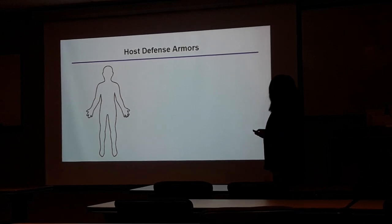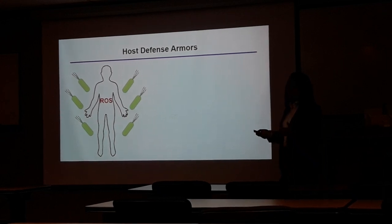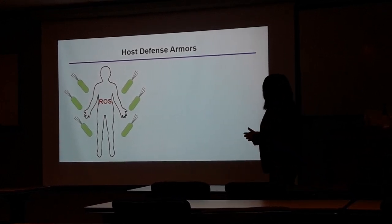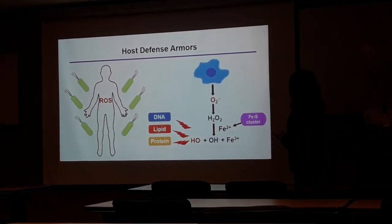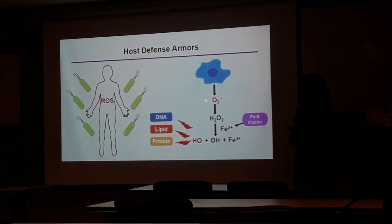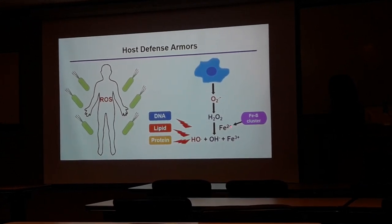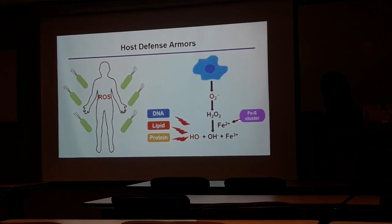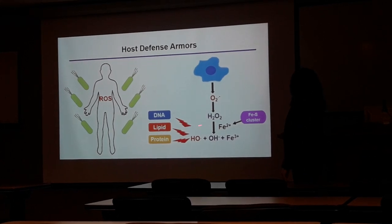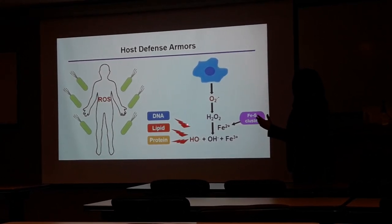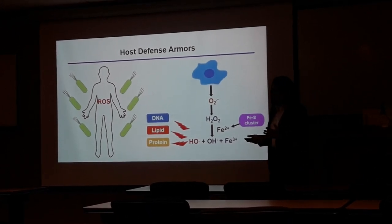The very early stage of innate immune response against bacterial infection is the production of reactive oxygen species or ROS. Different host cells produce superoxide radical, which can convert into hydrogen peroxide. Hydrogen peroxide can react with available redox-active metals, such as iron-sulfur clusters, to produce the more reactive hydroxyl radical. These reactive oxygen species — superoxide radical, hydroxyl radical, or hydrogen peroxide — can damage bacterial DNA, lipid membrane, or proteins.